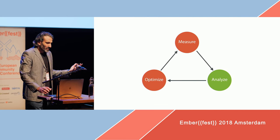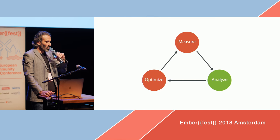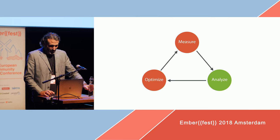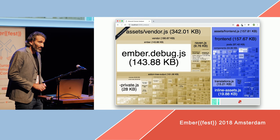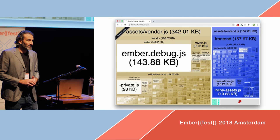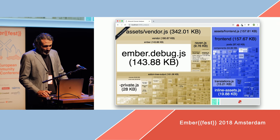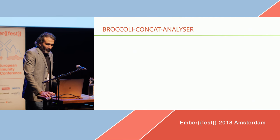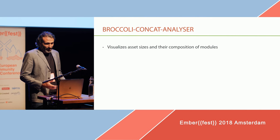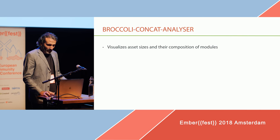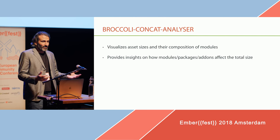Now that we have a way to continuously measure it, let's see how we can analyze it. You may have seen something like this before — this is the output of a tool called Broccoli Concat Analyzer. It's a tool to visualize your asset sizes and what modules are contained in each of your big bundles. It provides insights into how big individual modules, packages, and add-ons affect the total size of your app. It works in conjunction with the Broccoli Concat library, so it works with every Broccoli setup.